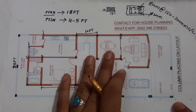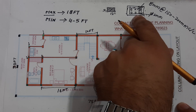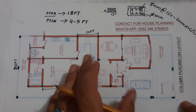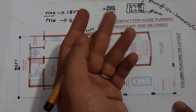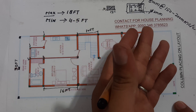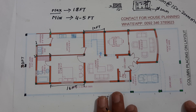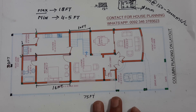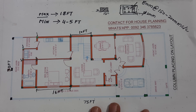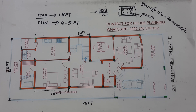For the beam, you can also keep the size at 9 by 12 inches, since this is a normal residential building up to two stories. Hope this short video helps you. Thanks for watching — see you in the next video, goodbye.